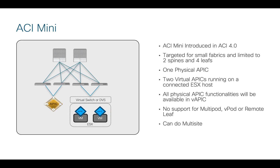Now if we shift here and look specifically at what we call ACI Mini, this was a solution introduced in ACI 4.0. It is specifically targeted at very small fabrics — remote offices, co-location facilities — and is limited to two spines and four leaves. The difference here is you only have one physical APIC, but the other two APICs that form the cluster are now virtual instances or VAPICs running on a connected ESXi host.